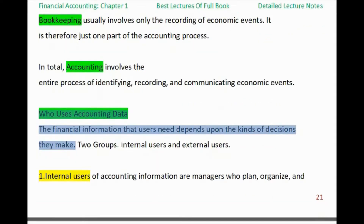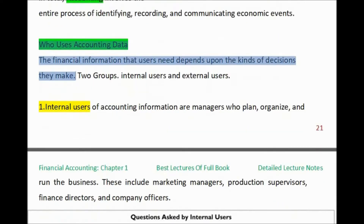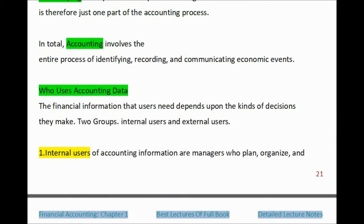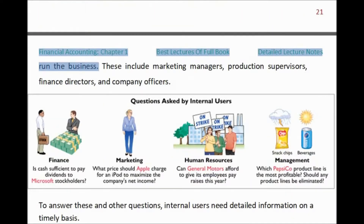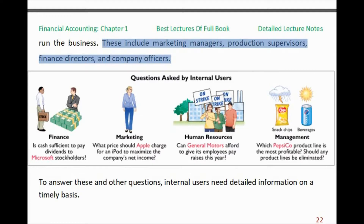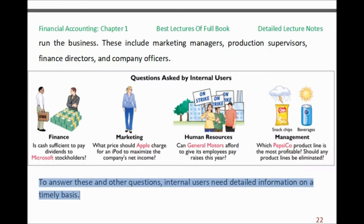Who uses accounting data? The financial information that users need depends upon the kinds of decisions they make. Two groups: internal users of accounting information are managers who plan, organize, and run the business. These include marketing managers and company officers. Internal users need detailed information on a timely basis.